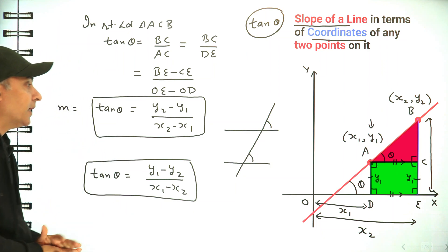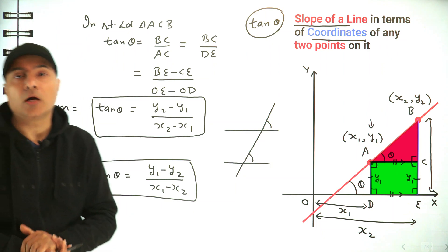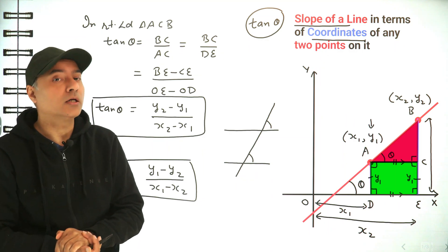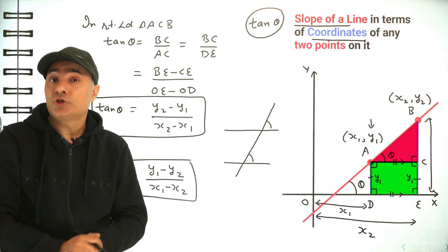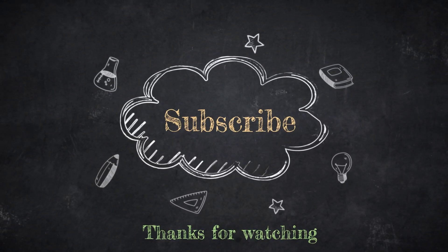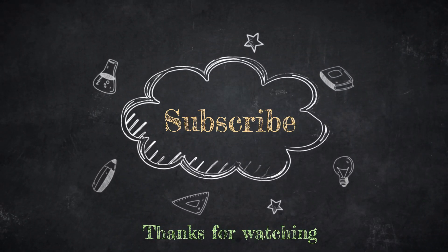This is a very simple and easy relationship between the slope of a line and the coordinates of two points on a straight line. If you liked this tutorial, please share it with your friends and classmates. Thanks for watching!